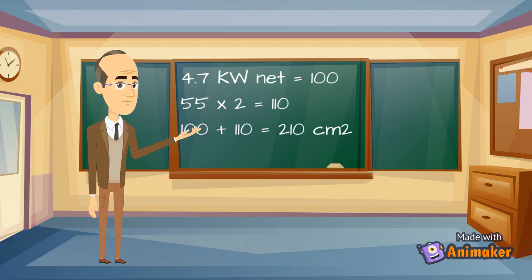Because our appliance is greater than 2.7 kilowatts net we must add 55 centimeters squared for every kilowatt in excess of the 2.7 kilowatts.